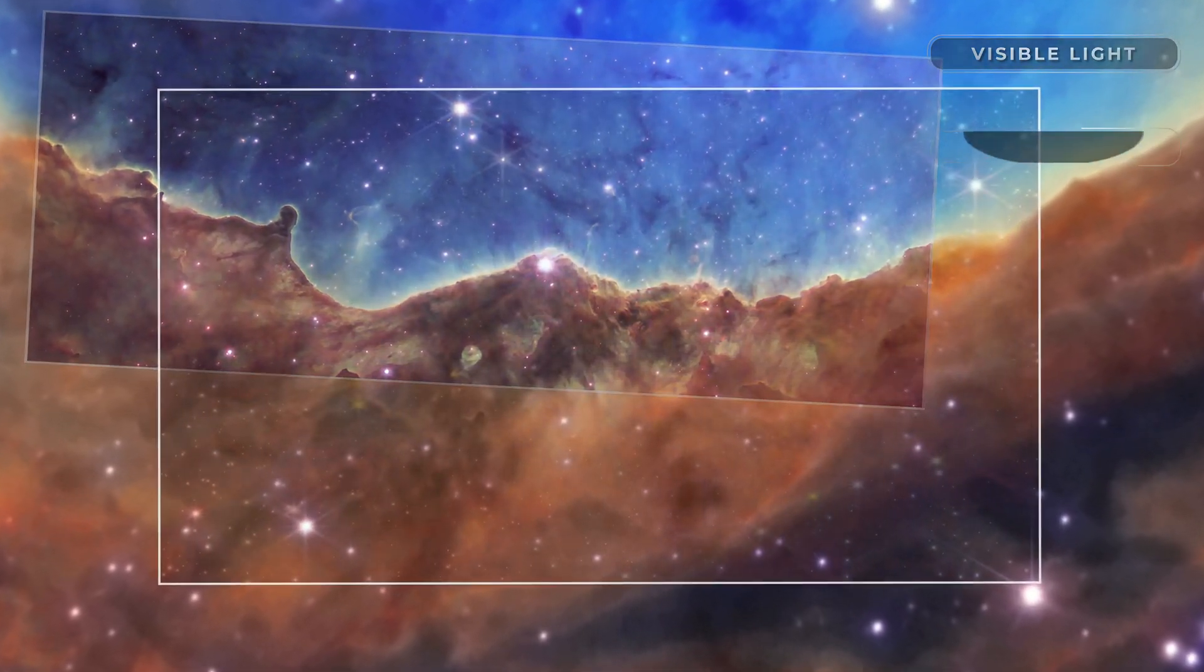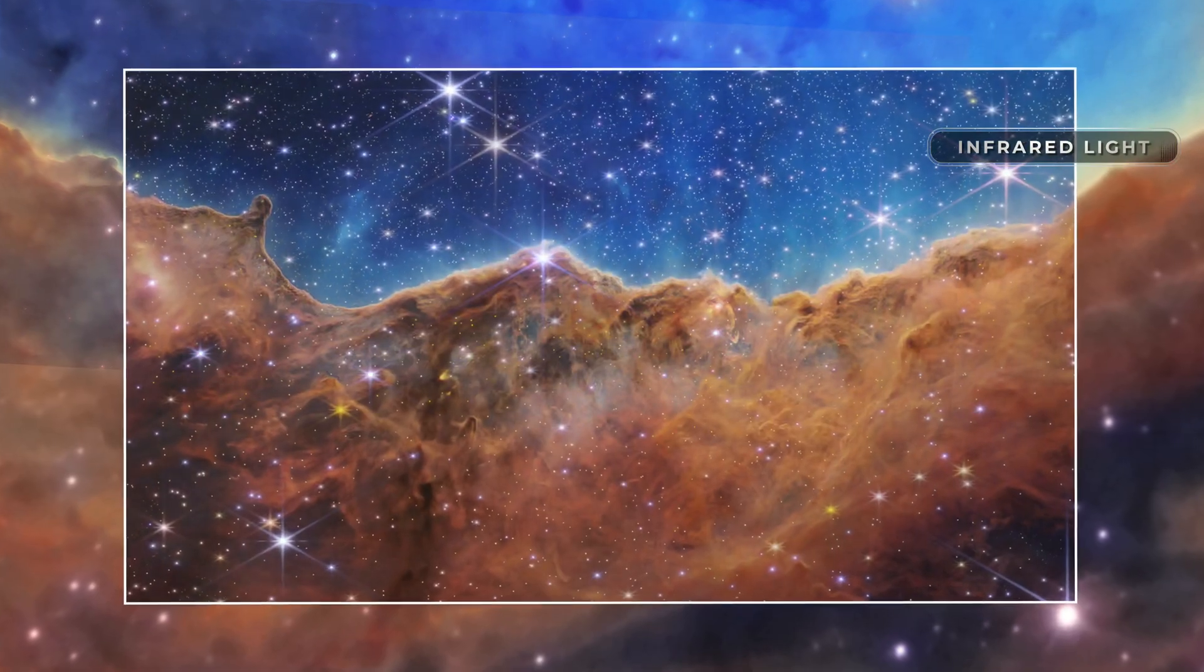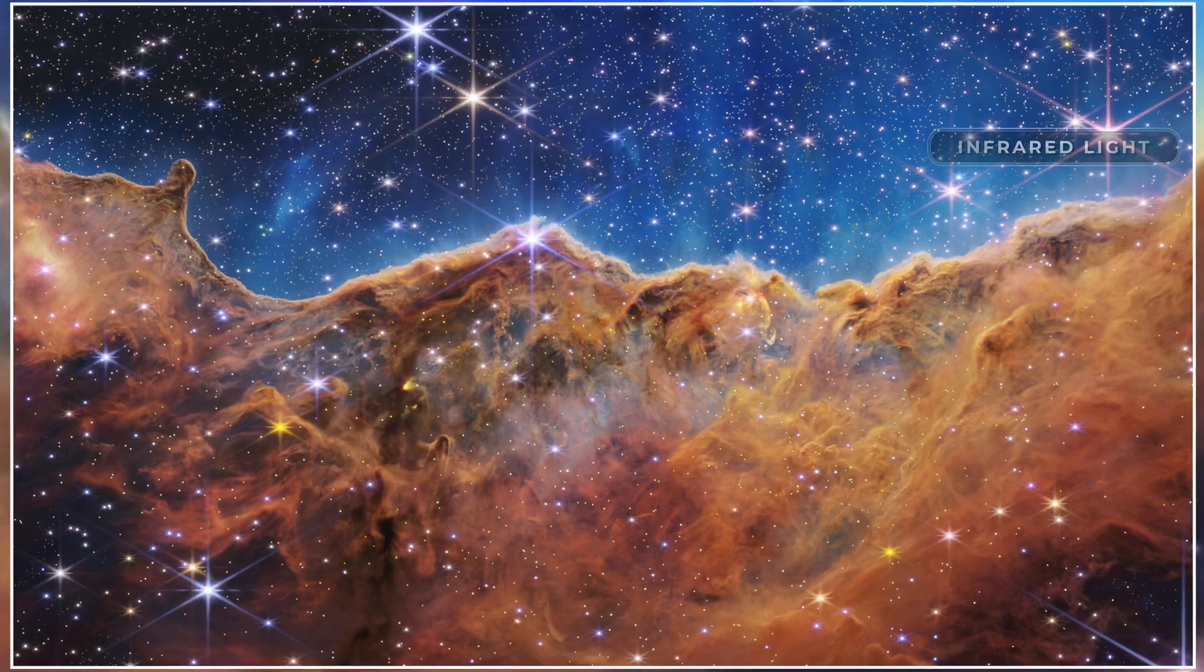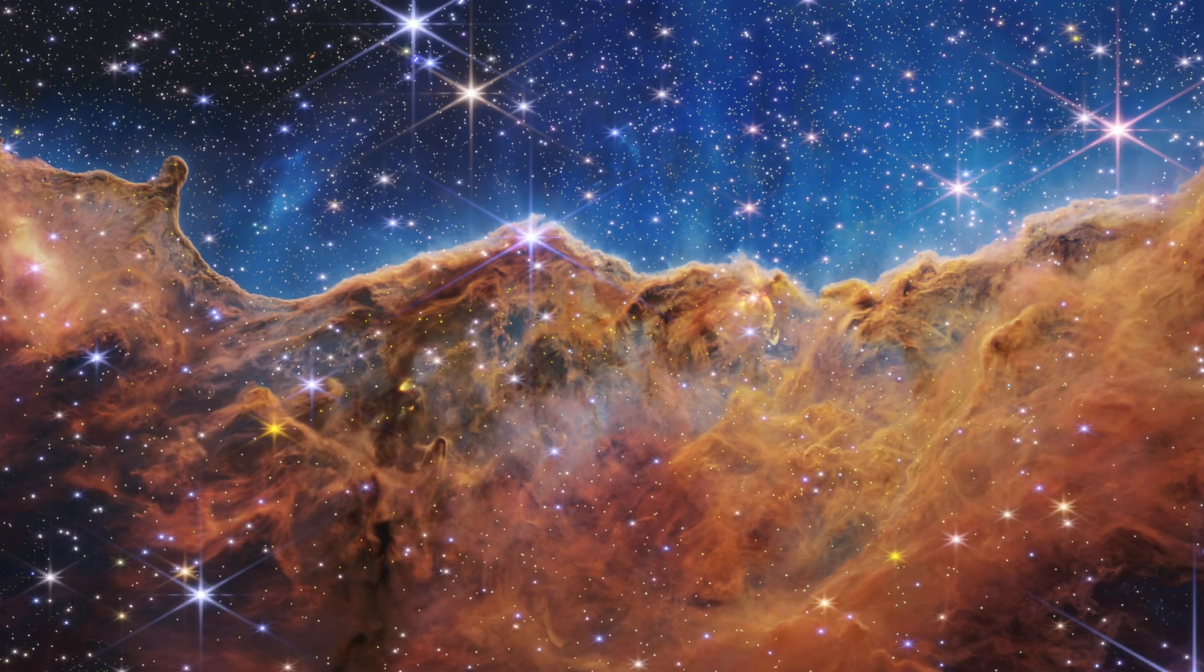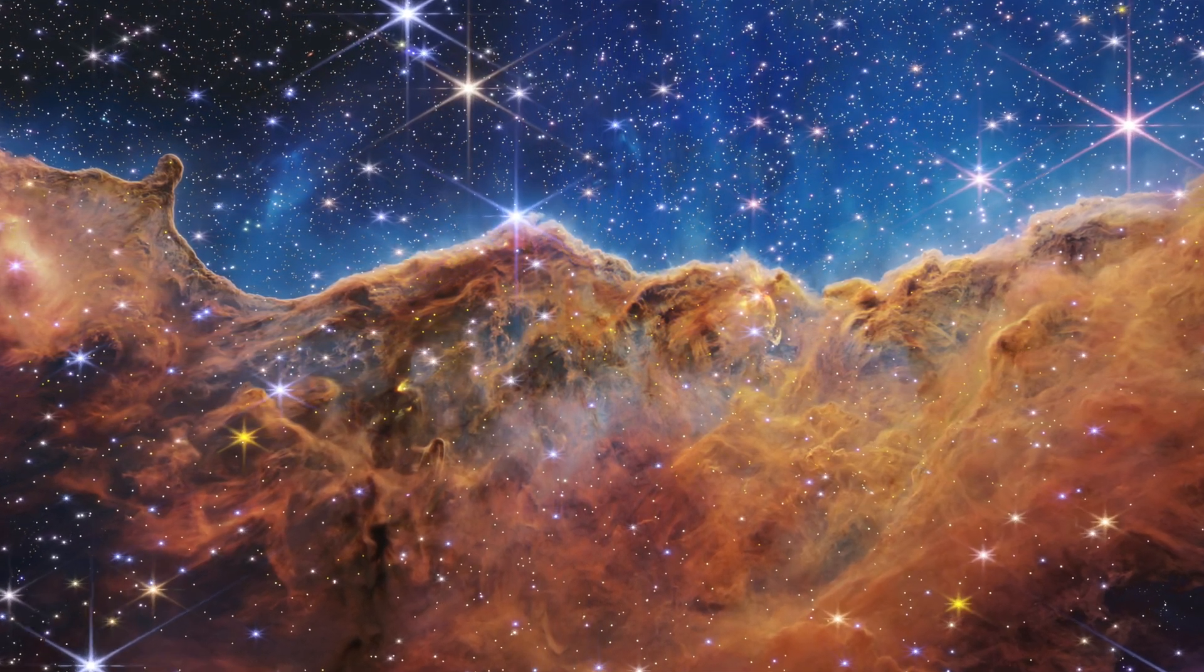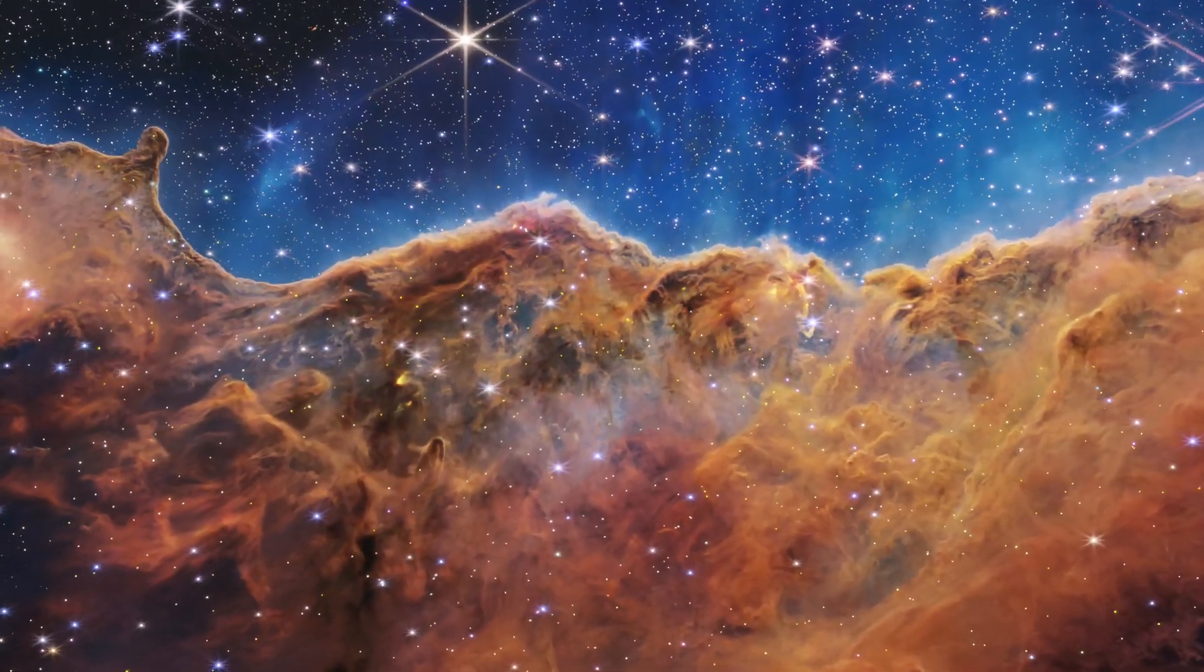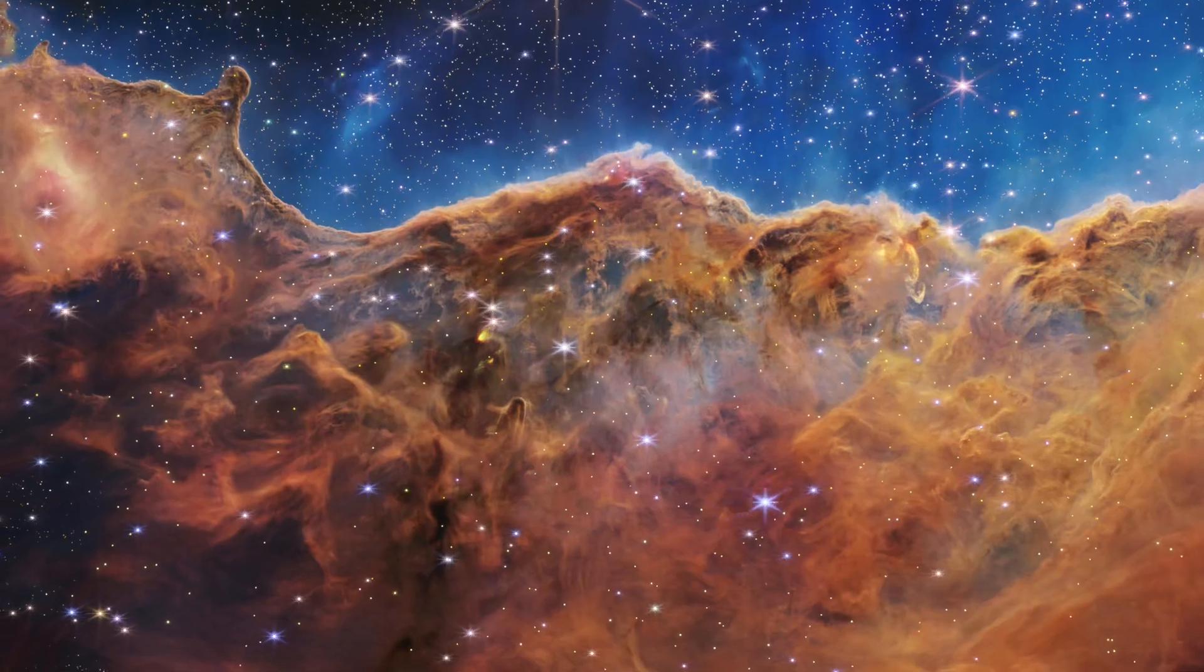This Webb Space Telescope infrared image is nicknamed cosmic cliffs. The cliffs within the image are actually dust clouds.